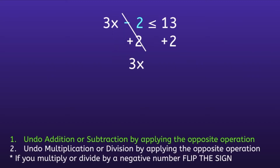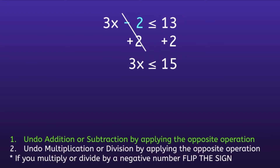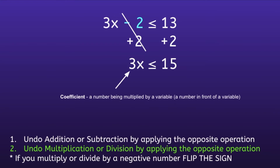We'll bring down that 3x and the inequality sign. If we focus on the right, we have 13 plus 2, and 13 plus 2 is equal to 15. This moves us on to step number two: undo multiplication or division by applying the opposite operation. I notice right away that we have a number in front of the variable. This is called a coefficient, and a coefficient is a number being multiplied by a variable.